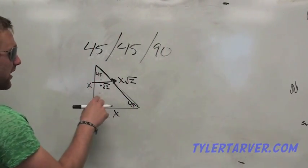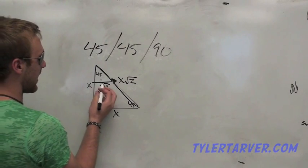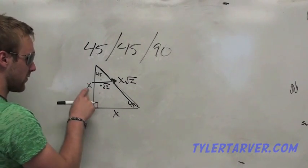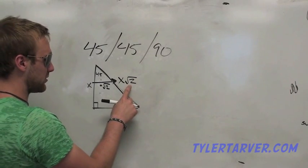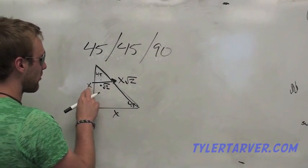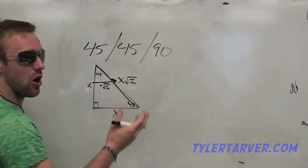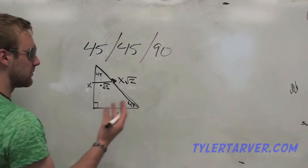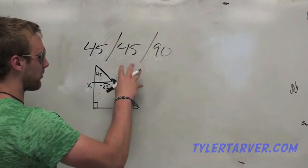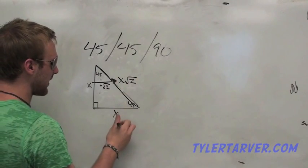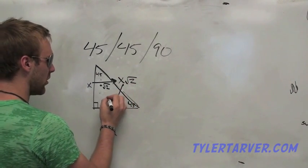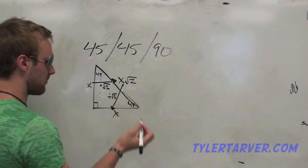Okay? 45, 45, 90 triangle. If we're going from the 45 side, which is opposite the 45, to the hypotenuse, what we're doing is we're going from X to X times the square root of two. All we're doing mathematically is timesing it by the square root of two. Now, by the same token, if we wanted to go from the hypotenuse to one of these 45 sides, what would we do to it? The opposite. We would divide by the square root of two.